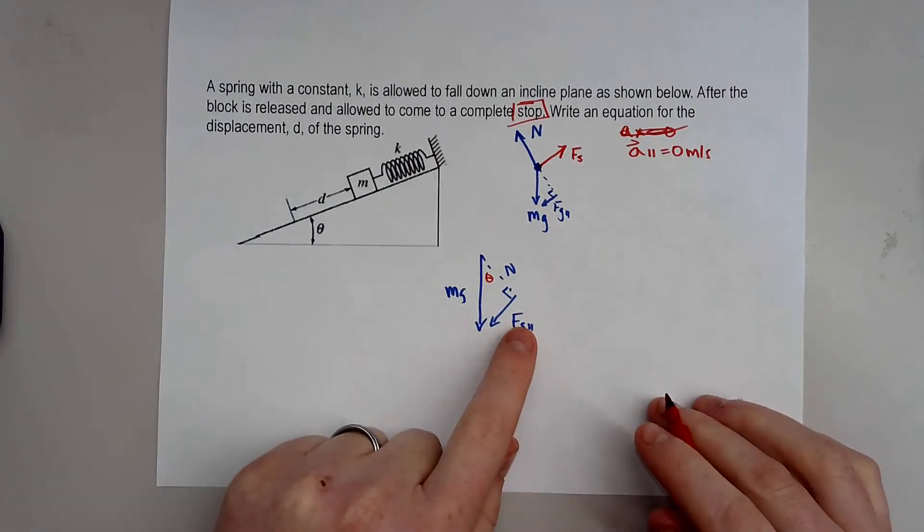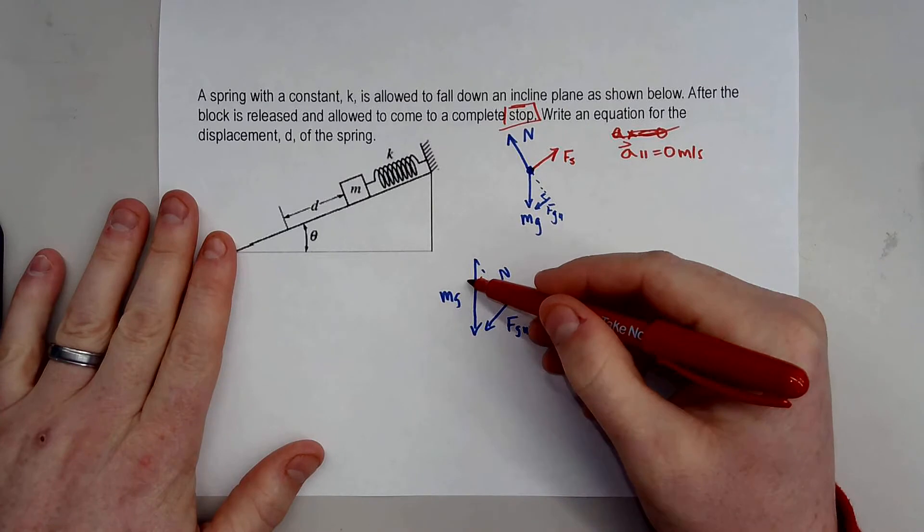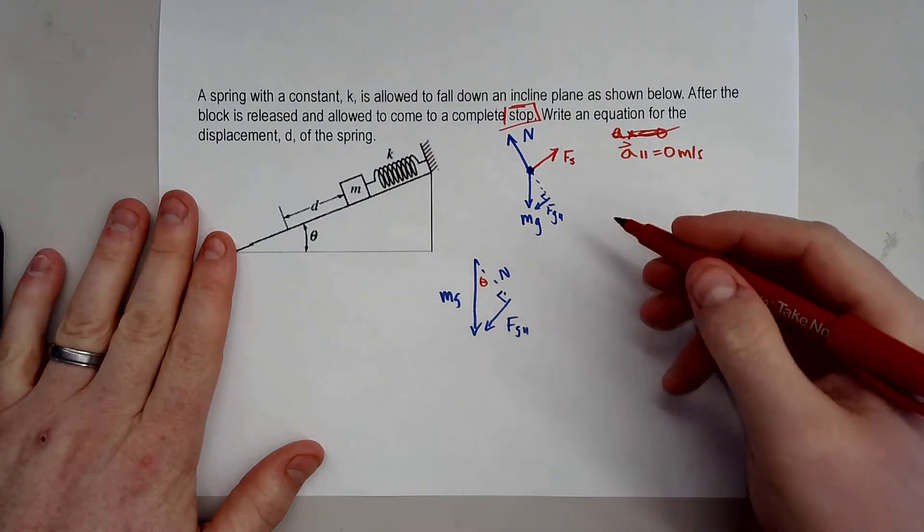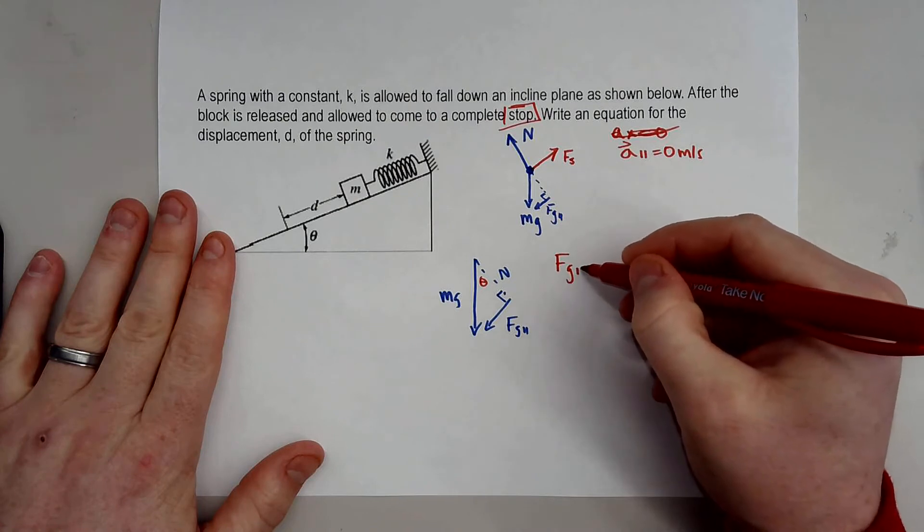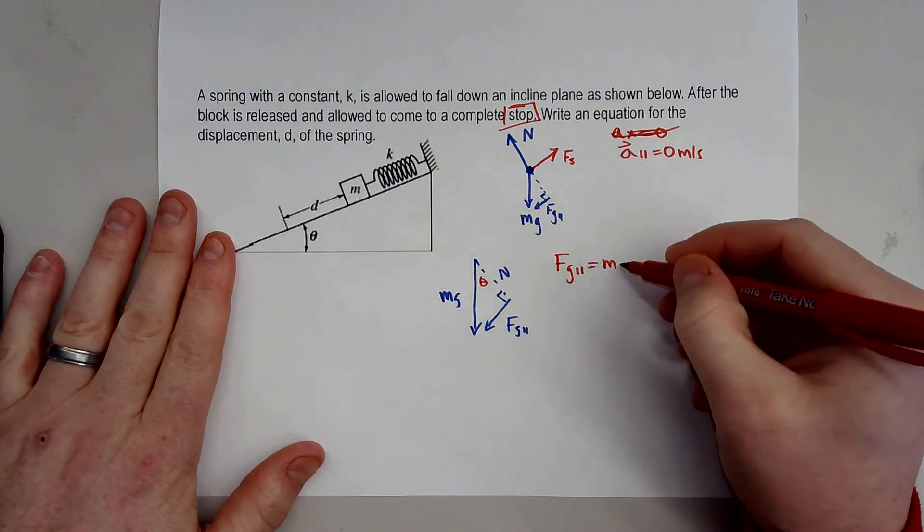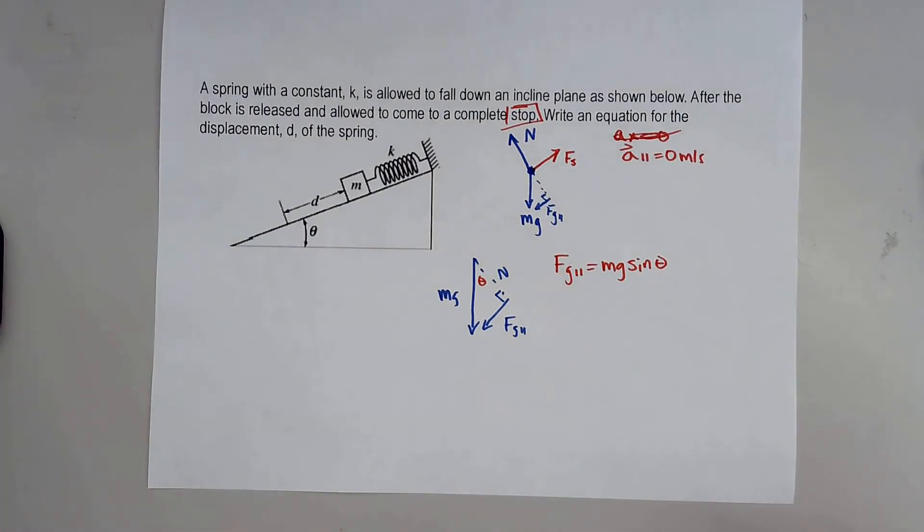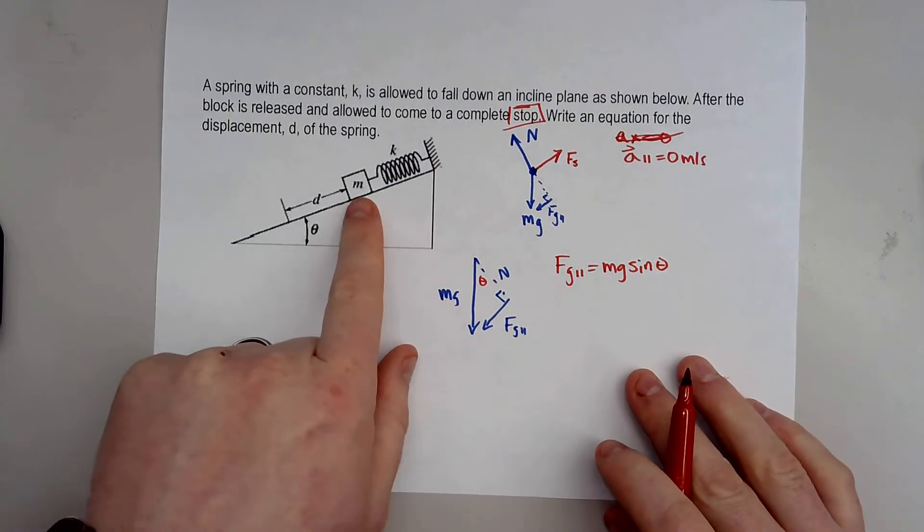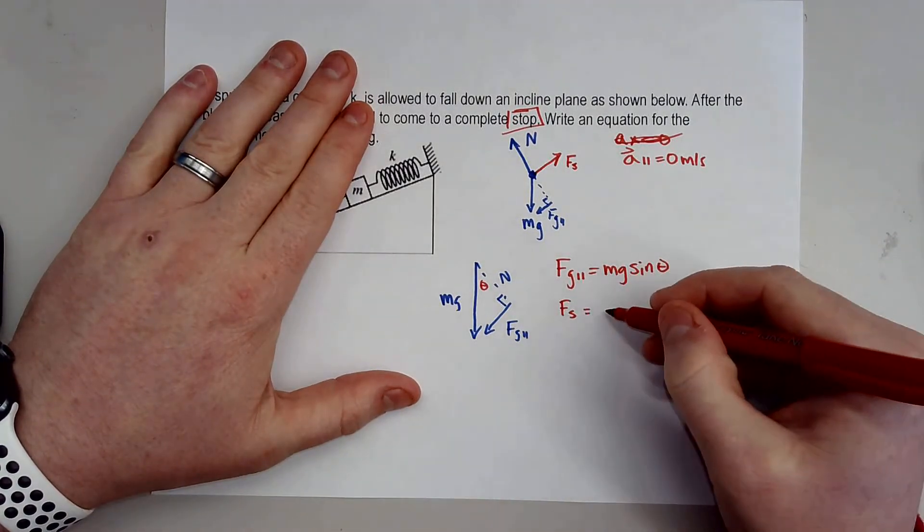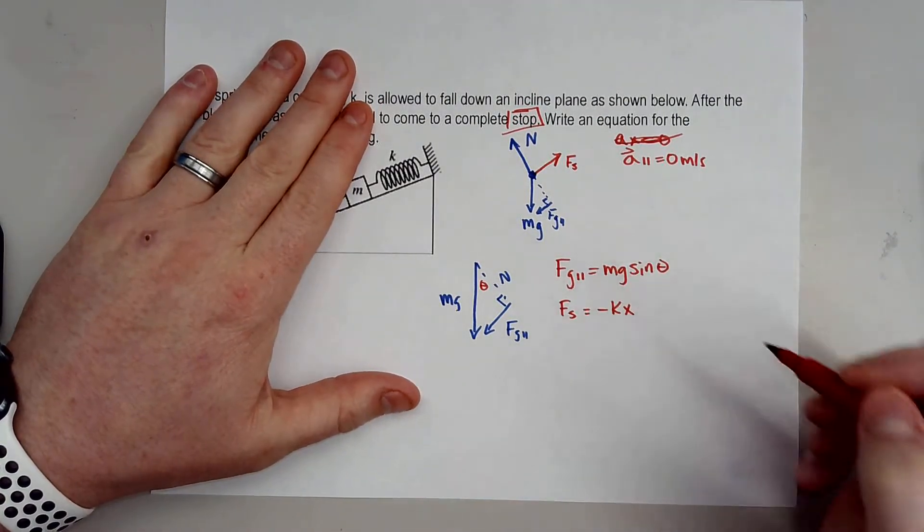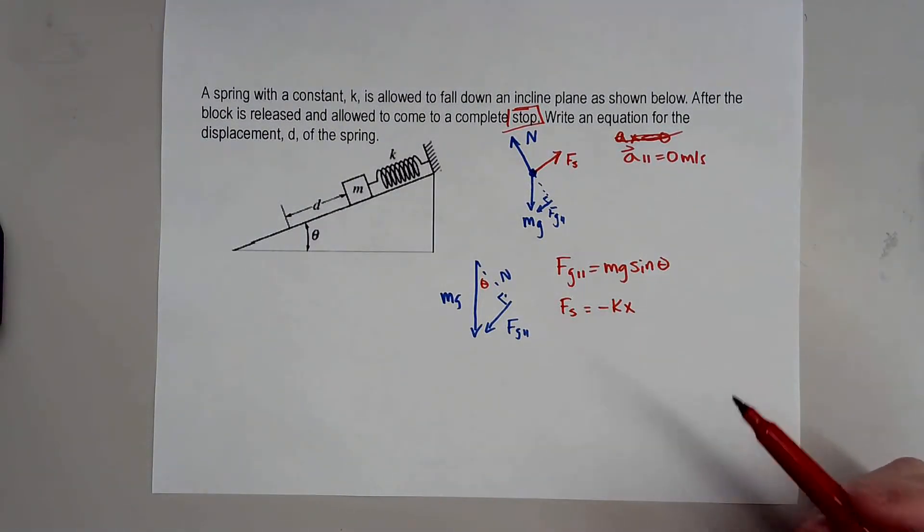So solving for this component of gravity you have mg, so you have your hypotenuse and your opposite. So that's going to give us this: the force of gravity that's pulling parallel to the ramp will just be mg sine of theta. And k is the constant and x is just the amount it's displaced.